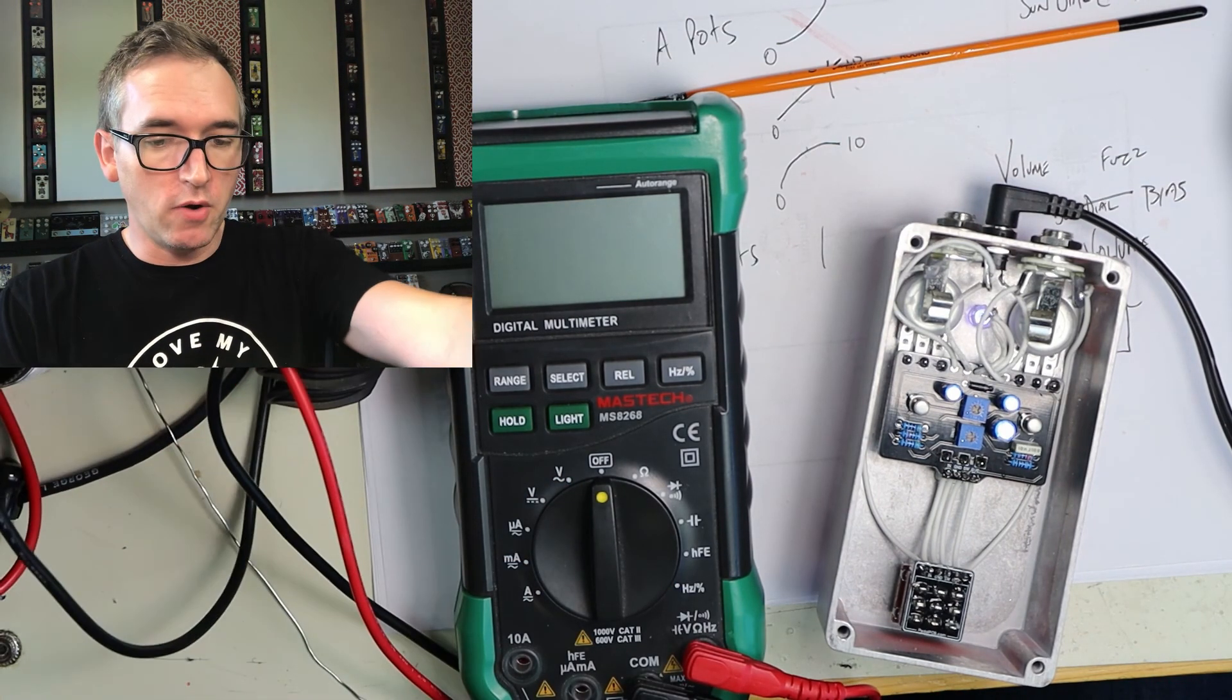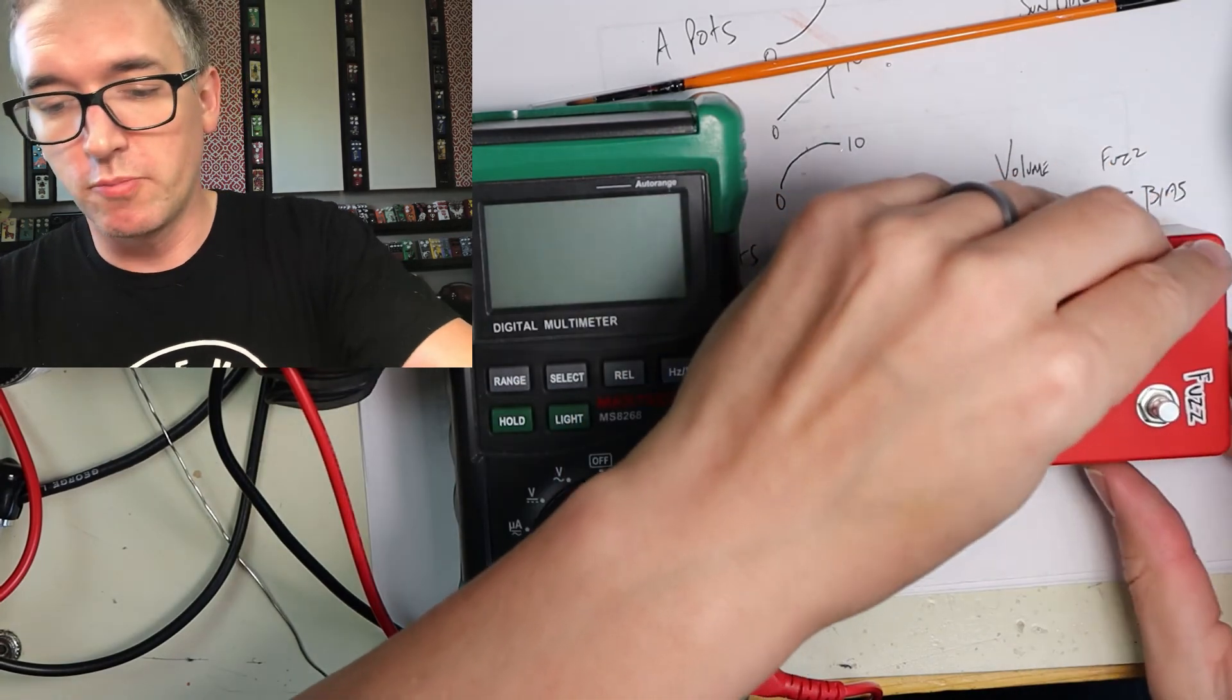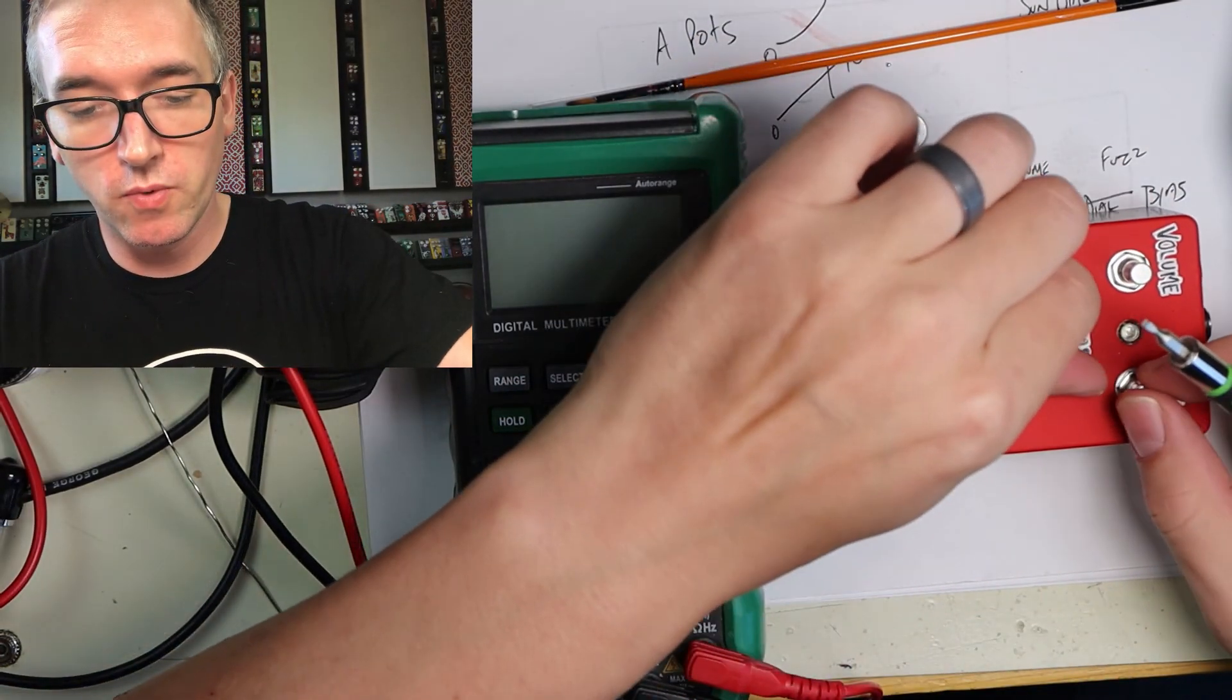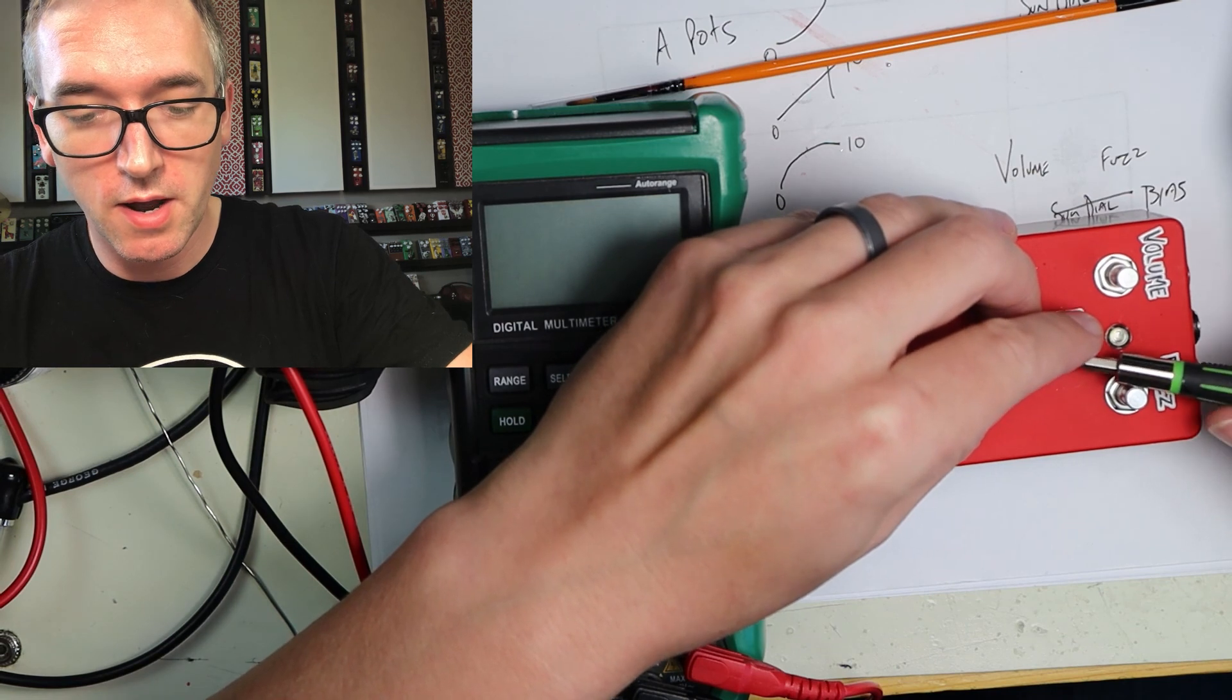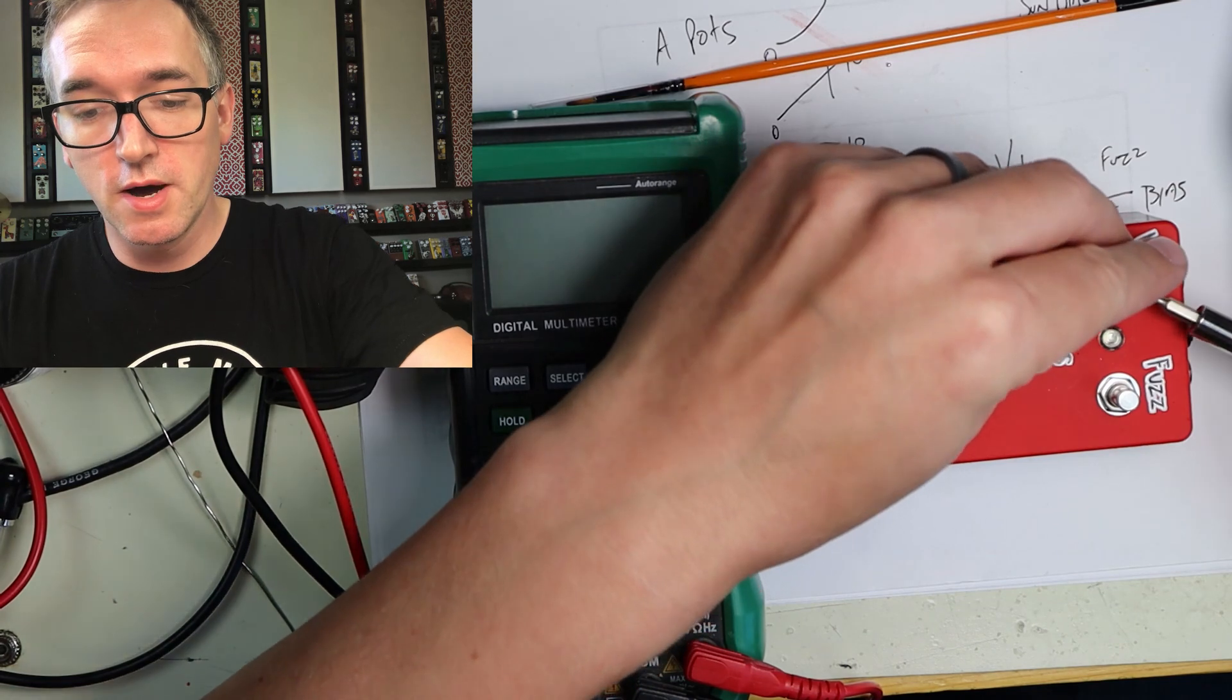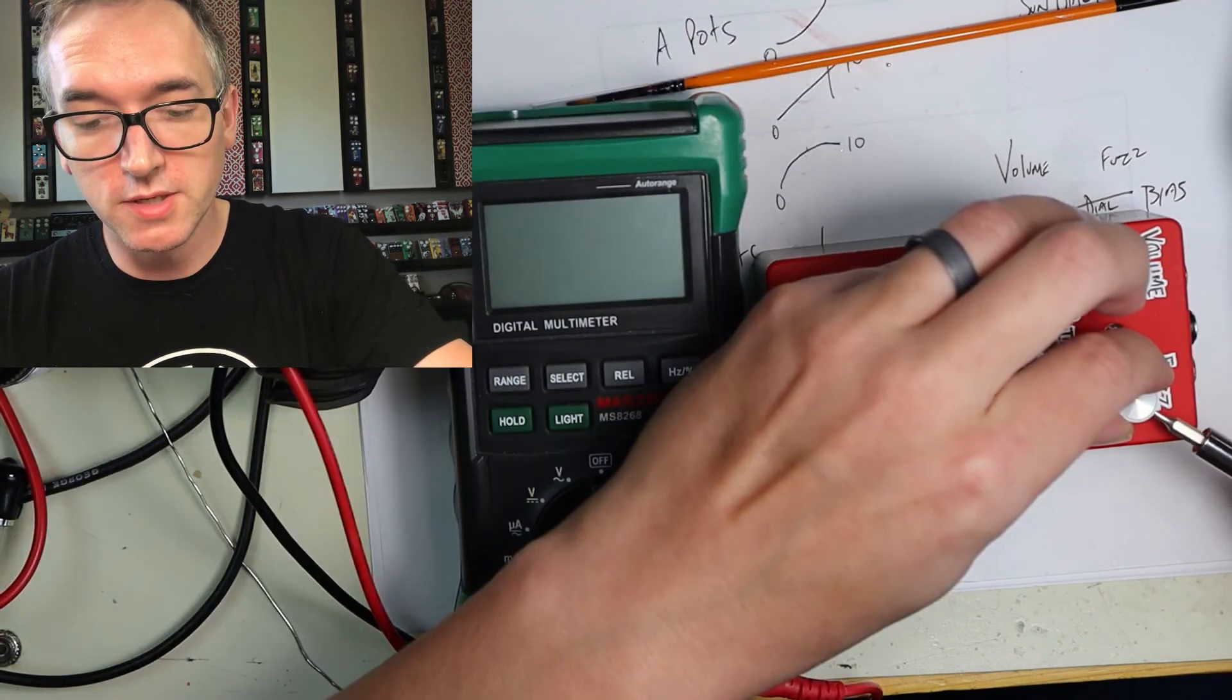So there we go. We have officially got a fuzz face built, biased. We're going to put on the knobs. Where's my screwdriver? And we're done. And what we're going to do now is I'm going to reset up all the cameras and we're going to test this thing and we will monkey around with the bias again, just so you guys can hear the difference. And yeah, yeah, fuzz face baby. VC 108 fuzz. Boom.